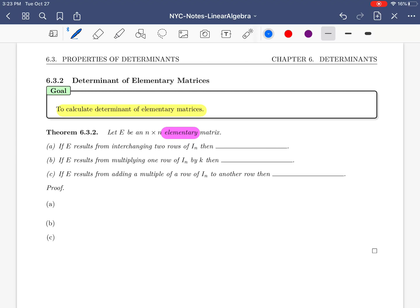Part A: If E results from interchanging two rows of I, then the determinant of E is minus 1.